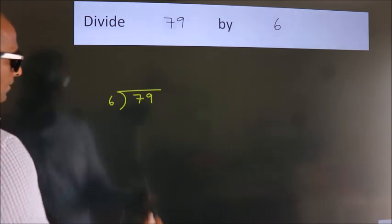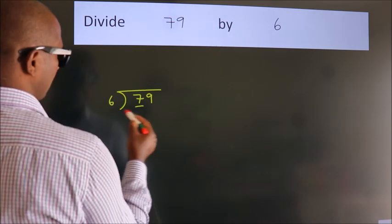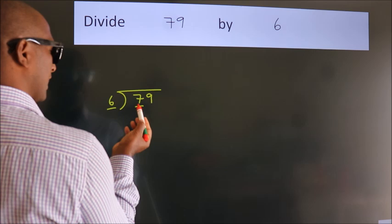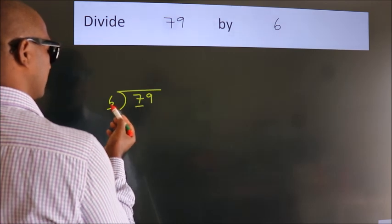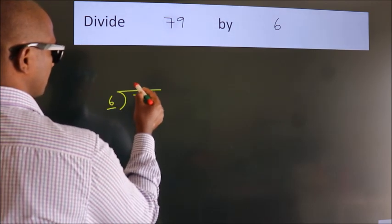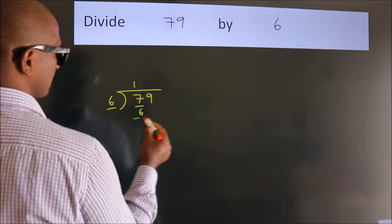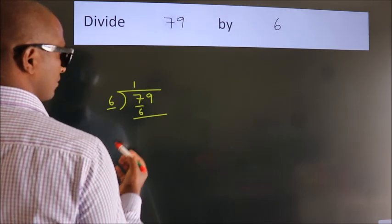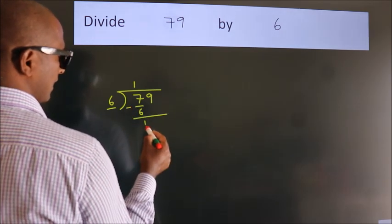Next, here we have 7, here 6. A number close to 7 in the 6 table is 6 ones, which is 6. Now we subtract and get 1.